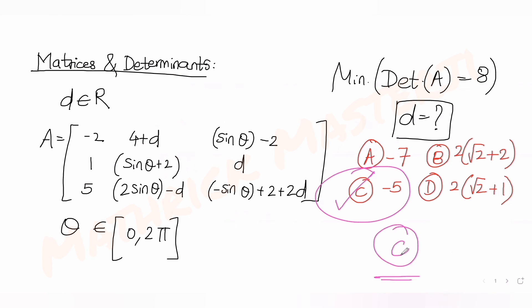So C is the answer. I hope you've understood how to solve this type of question using row transformations on matrices to simplify the determinant, and then equating the determinant expression to the given minimum value to obtain D = -5.